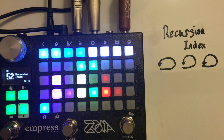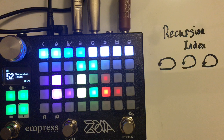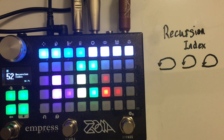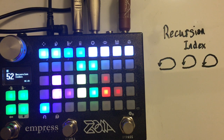Hi there. Today I want to talk about a patch called Recursion Index. I'm going to talk about what it does first and then talk about the controls, because I think they make more sense that way. What it is is kind of a delay, but it's a delay made of loopers that are set up in series.